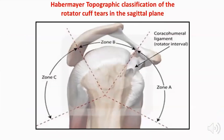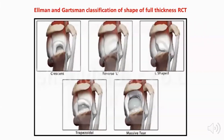Happlemeyer's topographic classification divides the rotator cuff into an anterior zone by the subscapularis, a superior zone by the supraspinatus, and a posterior zone by the infraspinatus and teres minor. The Ellman and Garstmann classification categorizes tears according to shape: crescent, reverse L, L-shaped, trapezoidal, or massive tear.